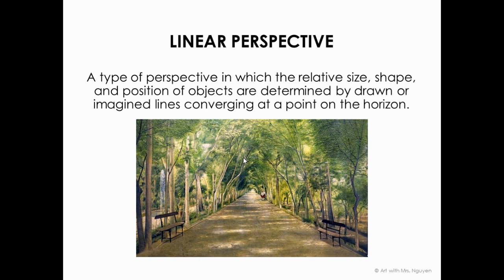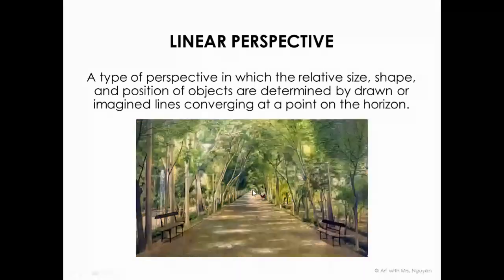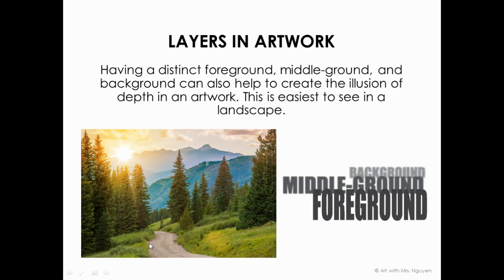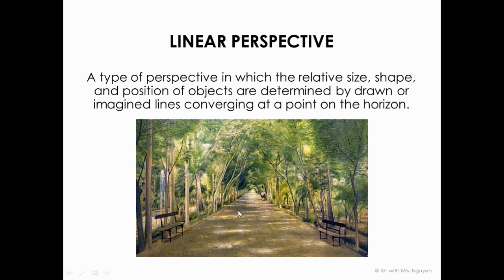You can also use what's called linear perspective. This is a skill set we'll be working on with older kids. It shows the relative size, shape, and position of objects in relationship to a point toward the back called the vanishing point. This vanishing point helps you draw everything in correct proportion. It's a more technical skill we'll be using with older students.